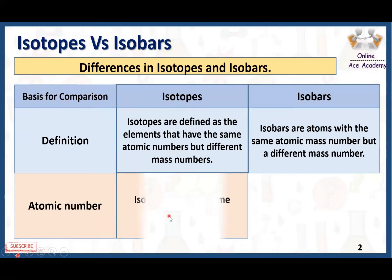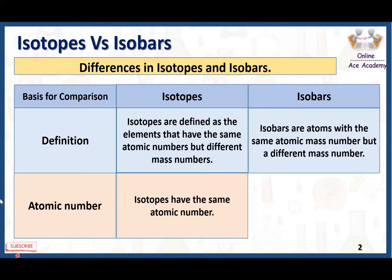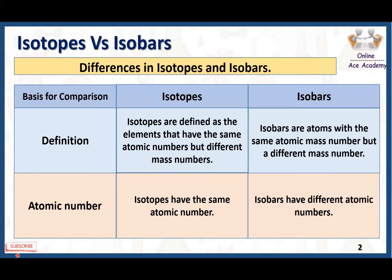Regarding atomic number: isotopes have the same atomic number because the atoms belong to the same one element. On the other hand, isobars have different atomic numbers because they belong to different elements.